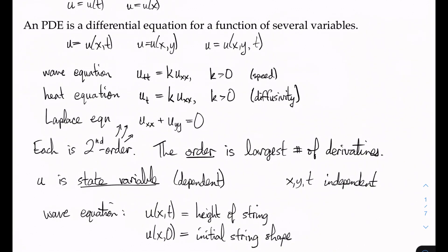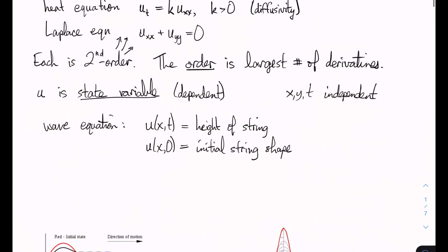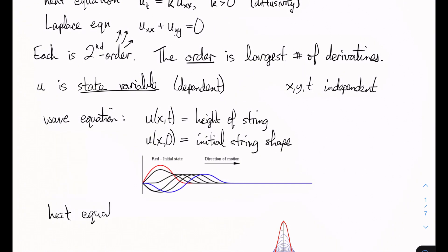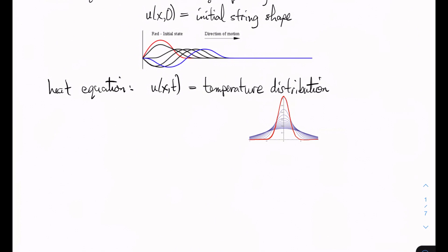And similarly for heat, in this case, u(x,t), if we're in one spatial dimension again, this would be the temperature distribution. So we might have something like this. I'm going to make him a little bit bigger here, something like this.